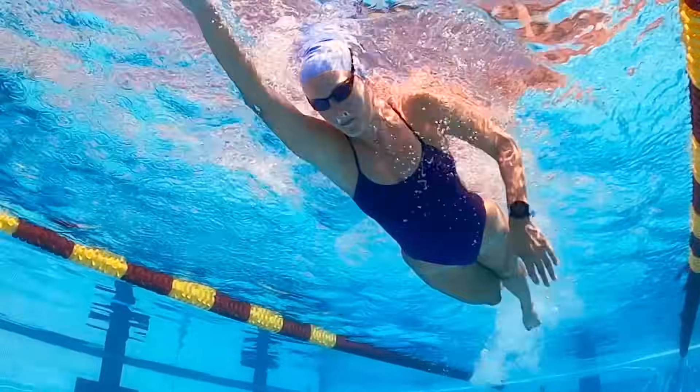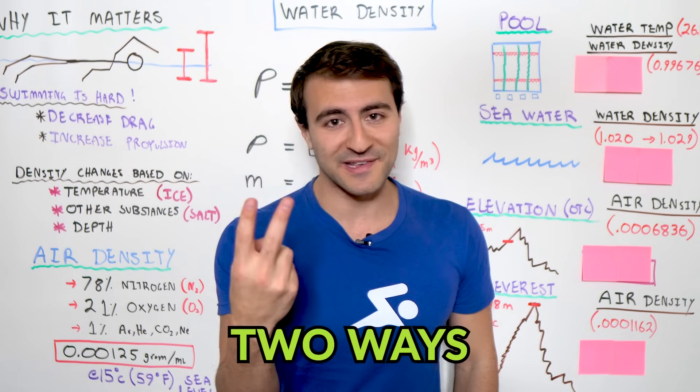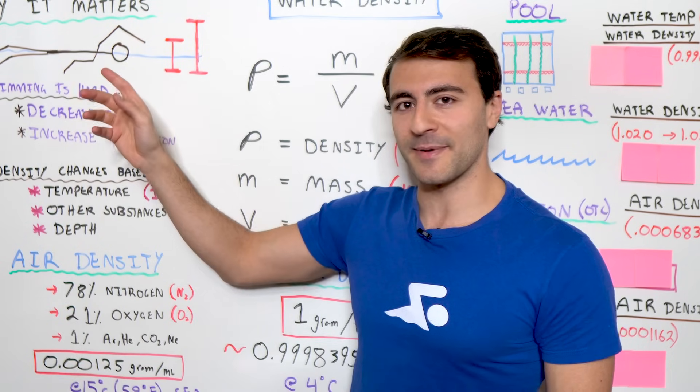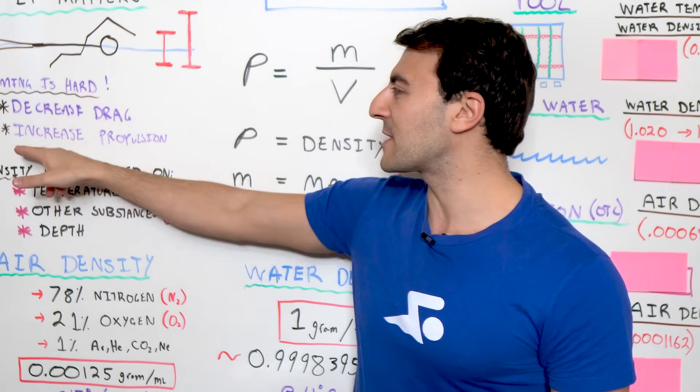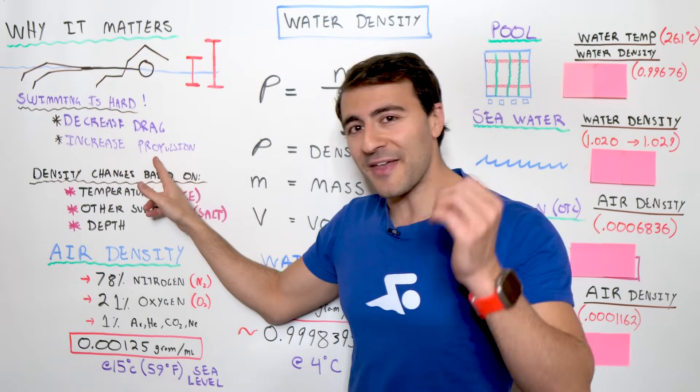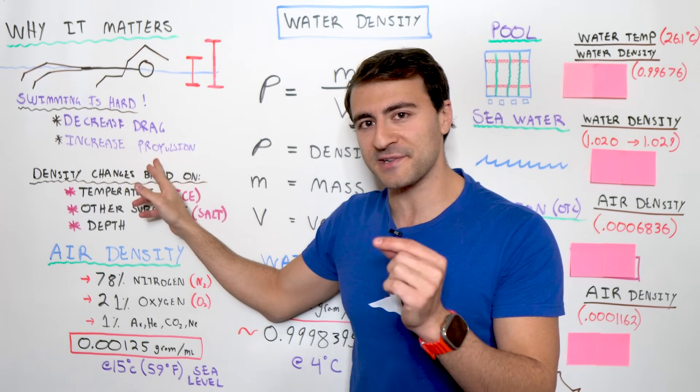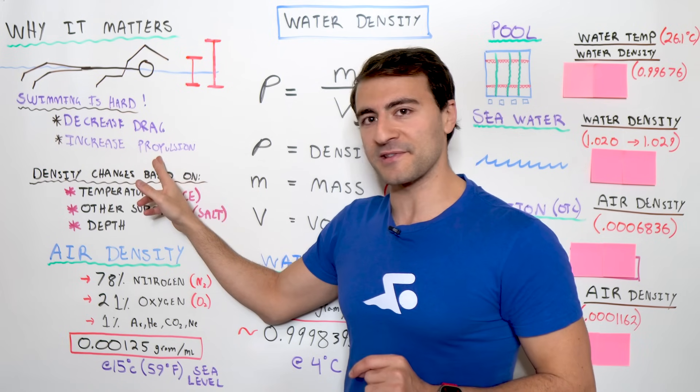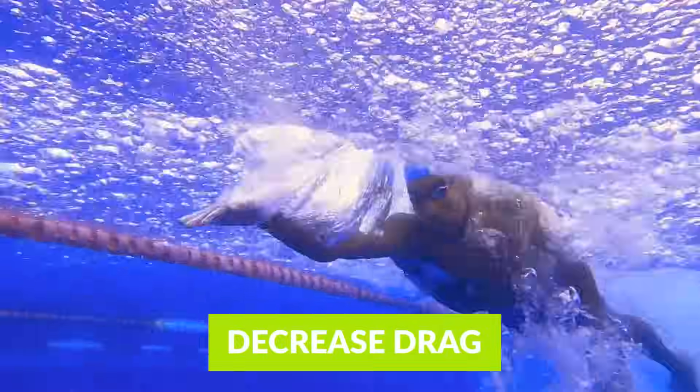Now, I've said it before and I say it again on this channel, there's only two ways to get faster at swimming. Number one, you can decrease drag and that's what we're going to talk about in this video. And number two, you can increase propulsion, which at the same time, if you understand the physics of water, you can actually leverage it to your advantage to increase your propulsion.